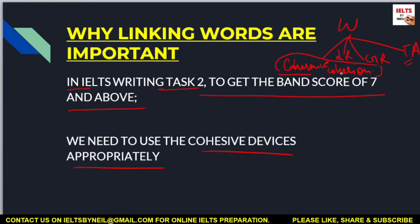Today we are going to cover coherence and cohesion, because linking words make your writing more cohesive — that's why they are also called cohesive devices. To get a better score and to ensure your sentences and information are interconnected, we use linking words. Let me explain this with the help of a Task 2 example, and we will see how I have used the linking words and what their importance is.